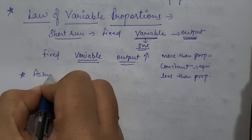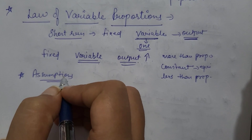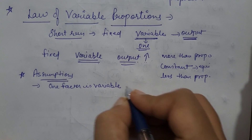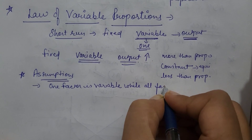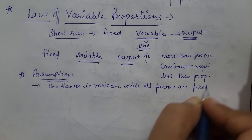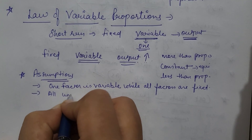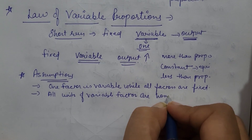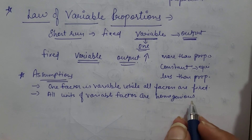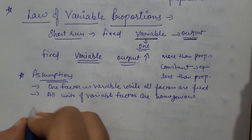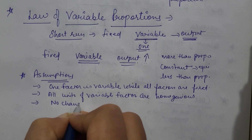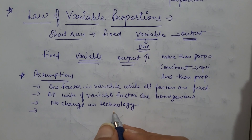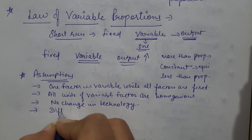First we will cover the assumptions of this law. The first assumption is that one factor is variable while all other factors are fixed or constant. Another assumption is that all units of the variable factor are homogeneous and equally competent — equally efficient units would be there in the context of the variable factor. Next is no change in technology, as we do not study technology shifts in the theory of production. And the last assumption is that different proportions could exist.